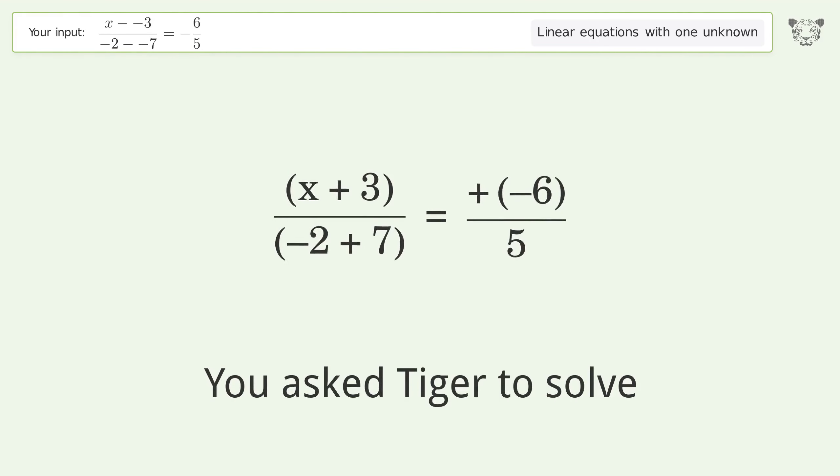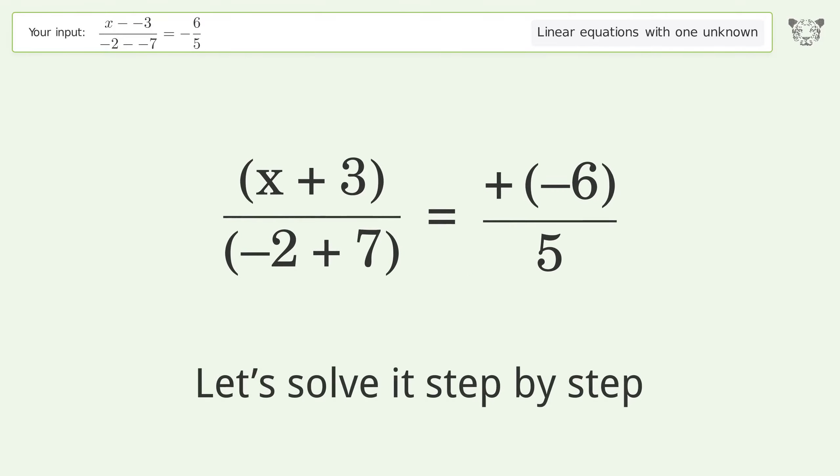You ask Tiger to solve this. This deals with linear equations with one unknown. The final result is x equals negative 9. Let's solve it step by step. Simplify the expression, simplify the arithmetic.